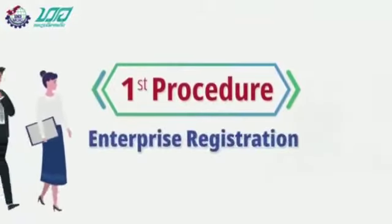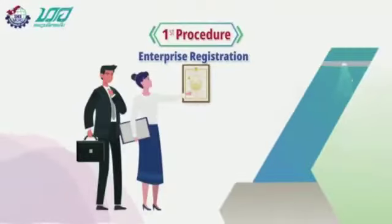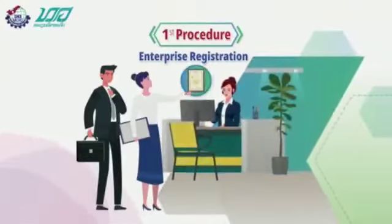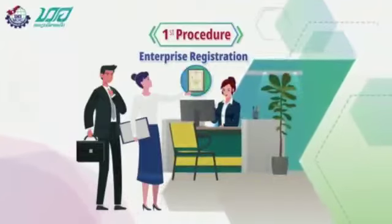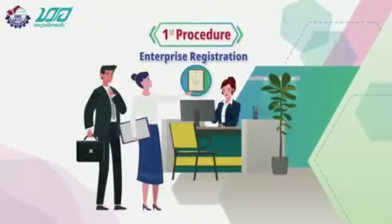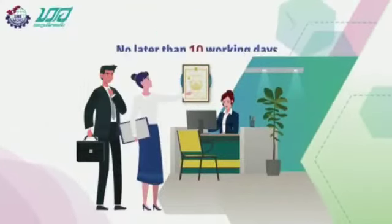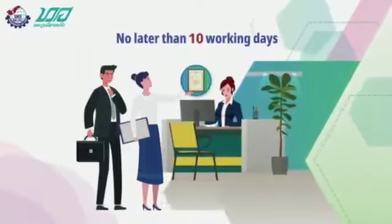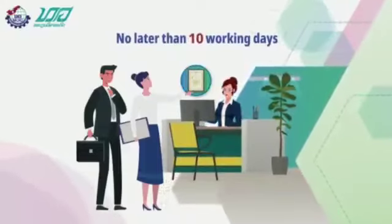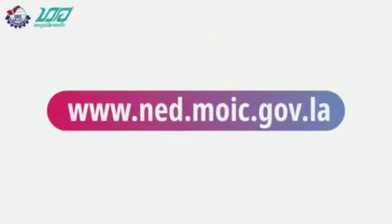Procedure 1: Enterprise Registration. An investor who wishes to register an enterprise under the business activities outside the controlled business list shall apply with the relevant enterprise registrar of the industry and commerce sector at the central or local level where the investor's office is located. The investor will then receive the enterprise registration certificate and the taxpayer identification number no later than 10 working days from the date that the completed application has been received. The application forms for the enterprise registration can be downloaded at www.ned.moic.gov.la.